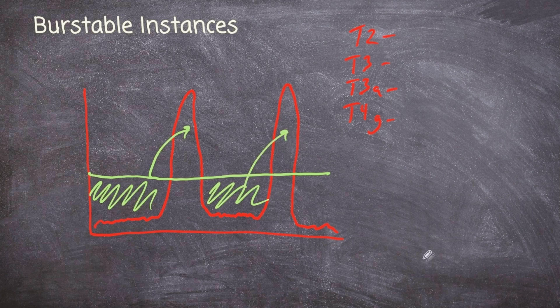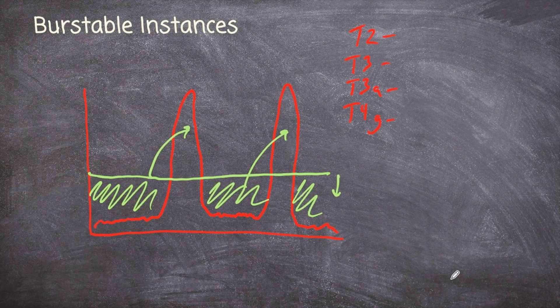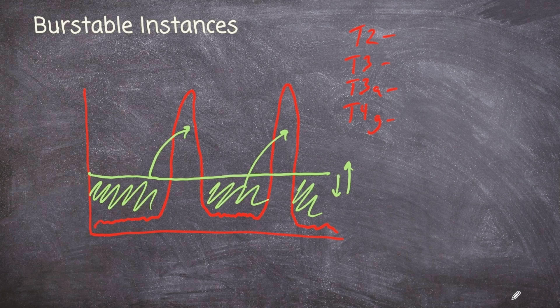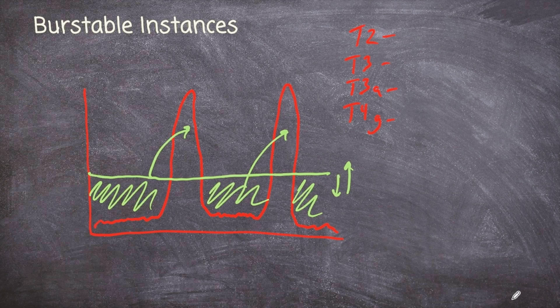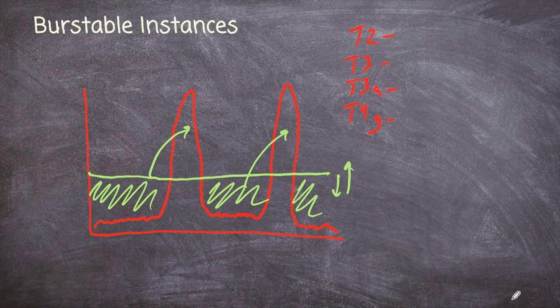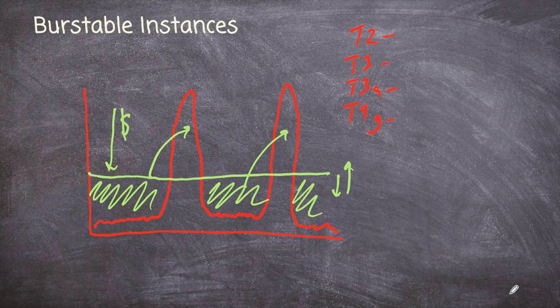Now, what burstable instances do is it allows us to bank this unused processing power, and it's going to allow us to use that in a sort of credit exchange. We earn credits whenever our CPU is below some sort of average threshold, and then when it spikes, we can apply these credits to that load. And so these burstable instances are a pretty popular option if you really don't know how your computing resources are going to be stressed. So if you hear somebody talk about burstable instances, that's the concept behind the burstable instances. Think about us as just being able to save up for those peak spikes, and we can use these credits, these CPU credits for those spikes. And what that allows us to do is basically have an overall lower cost for our instances, because we don't have to use a larger instance just to meet those occasional peak spikes.